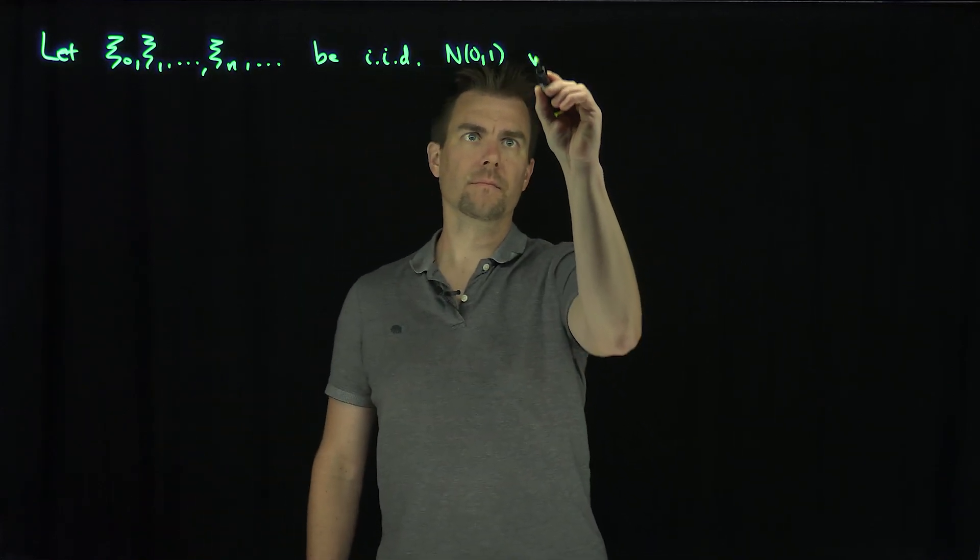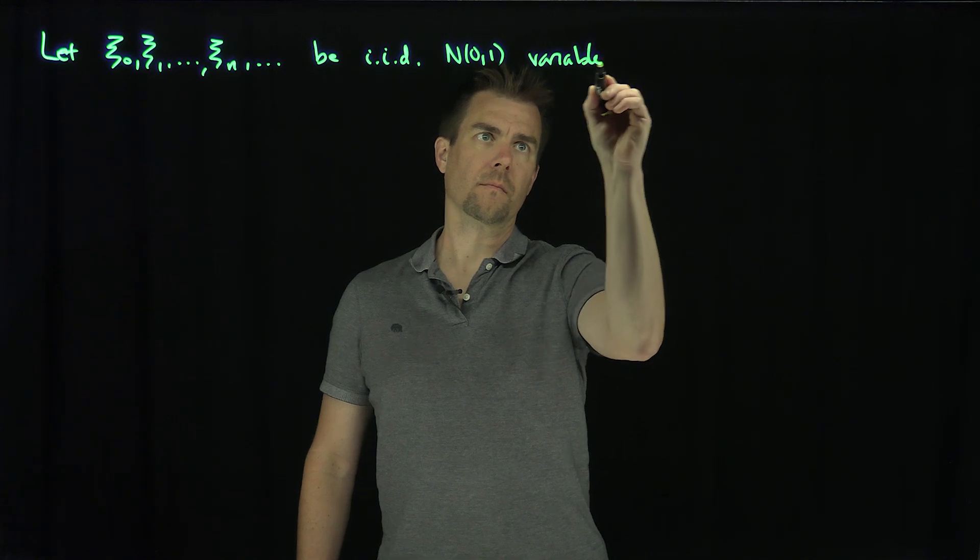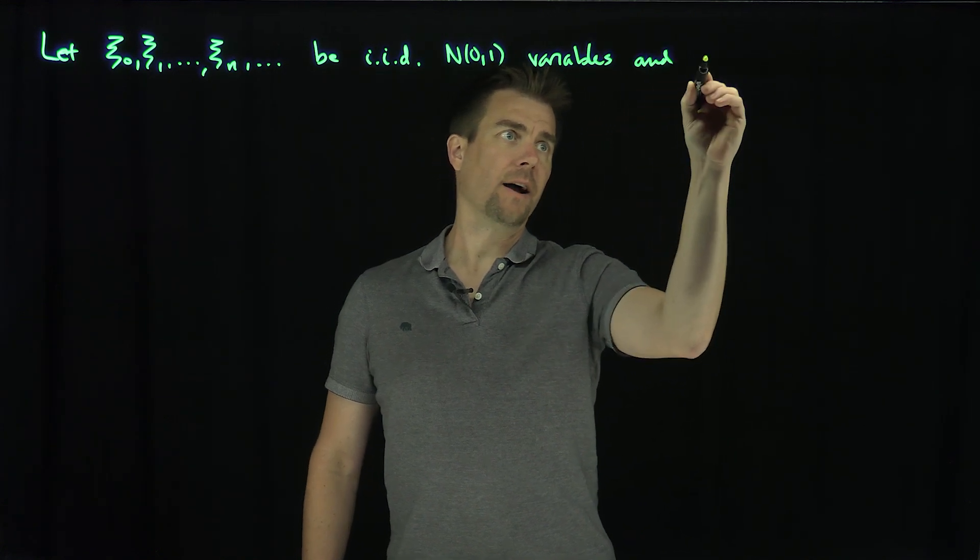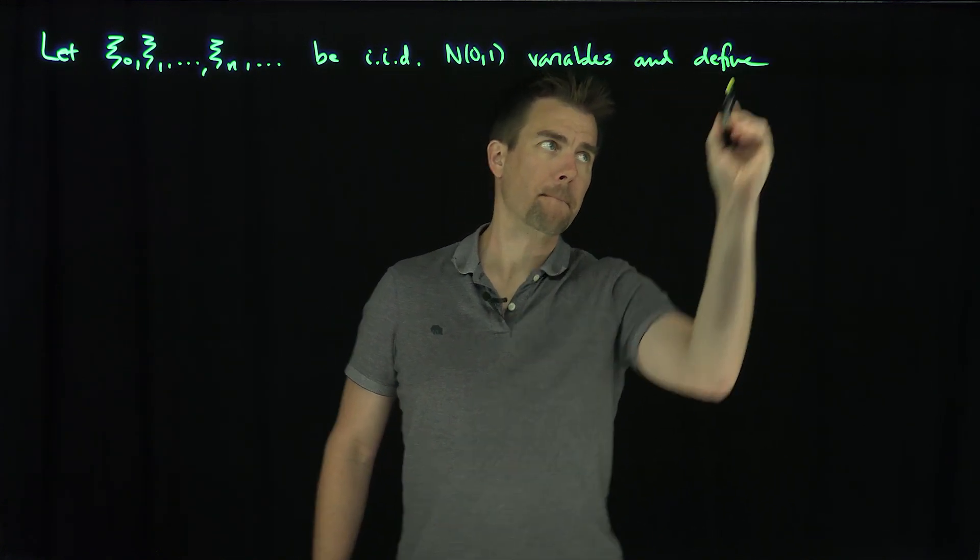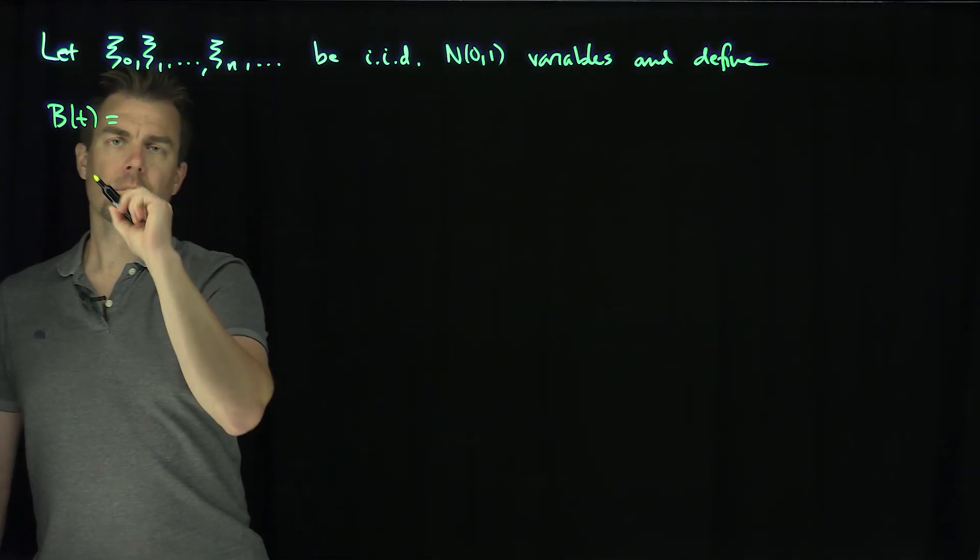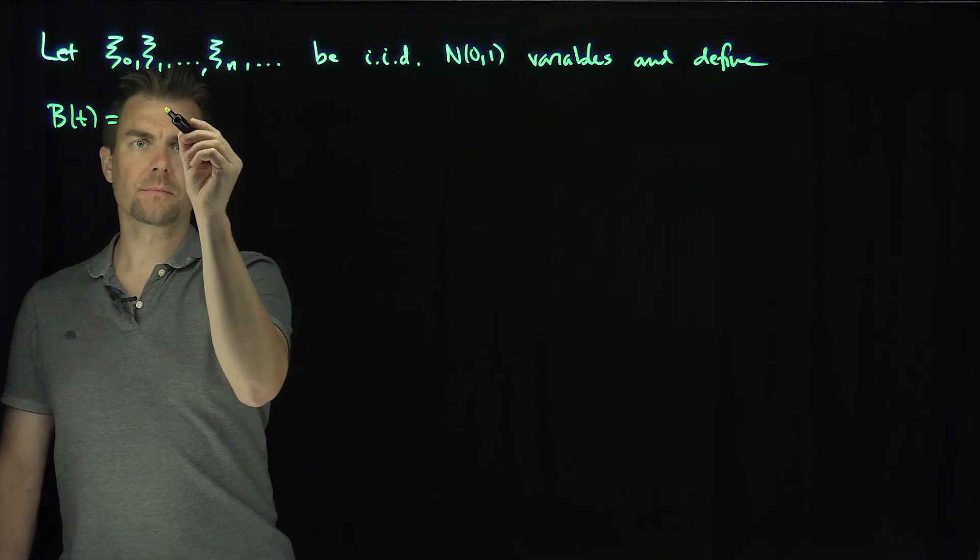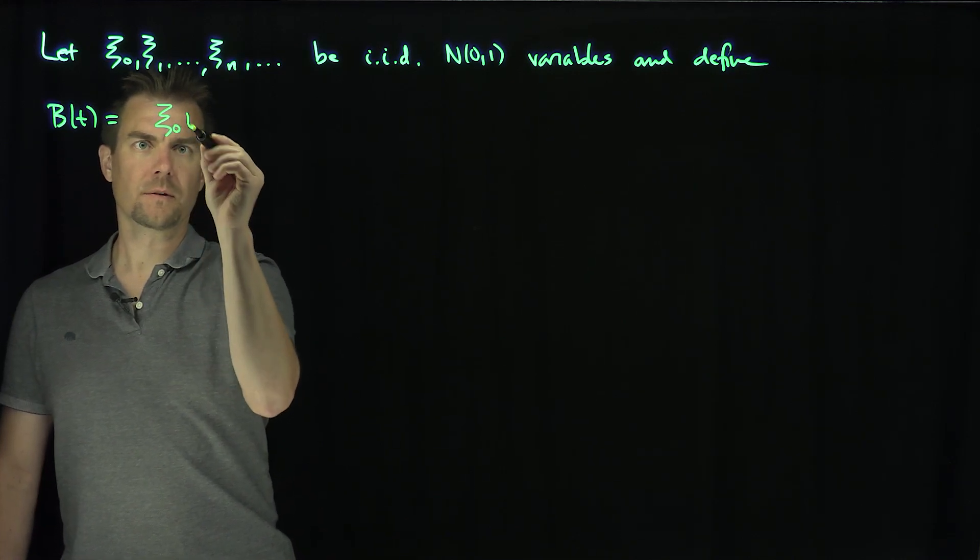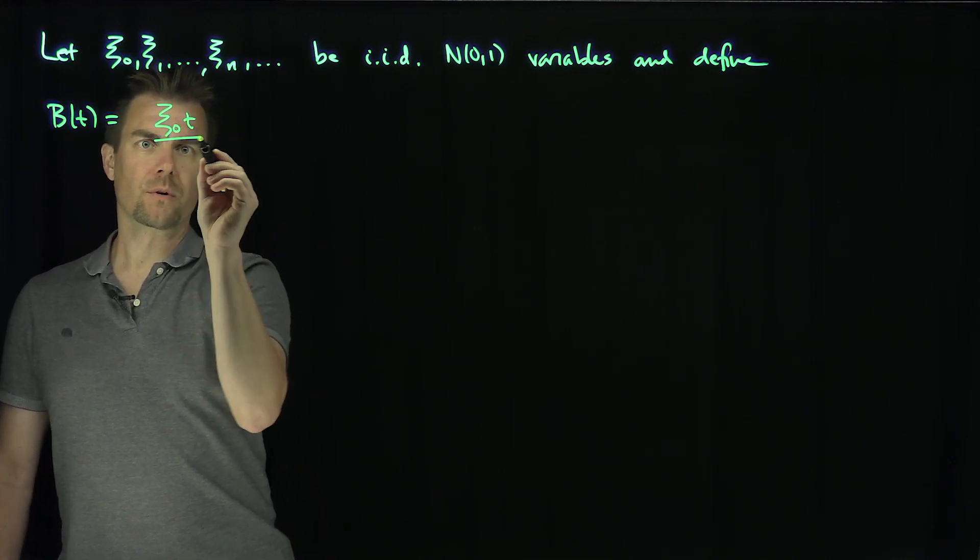And define B(t) to be x₀ t over the square root of π.